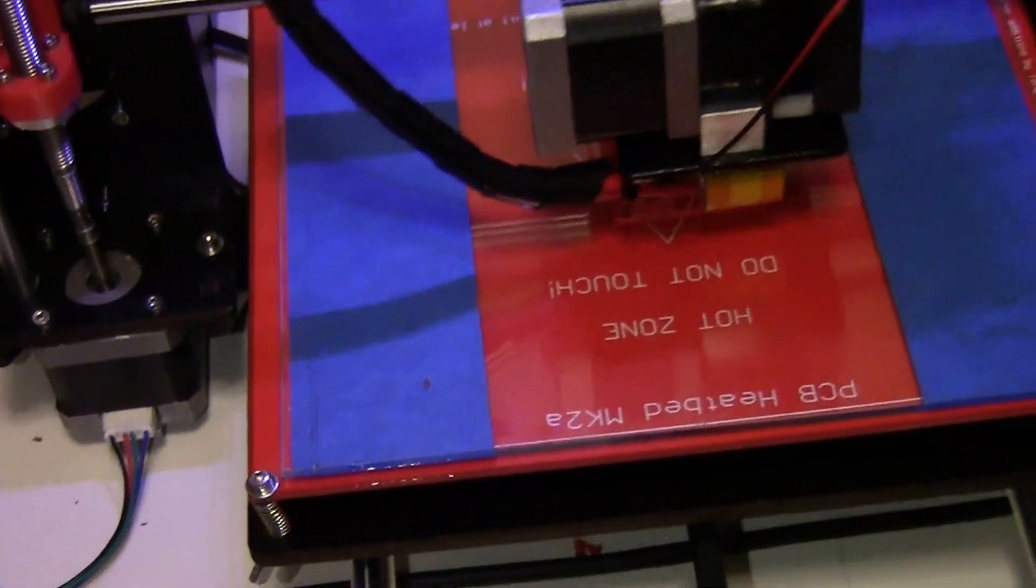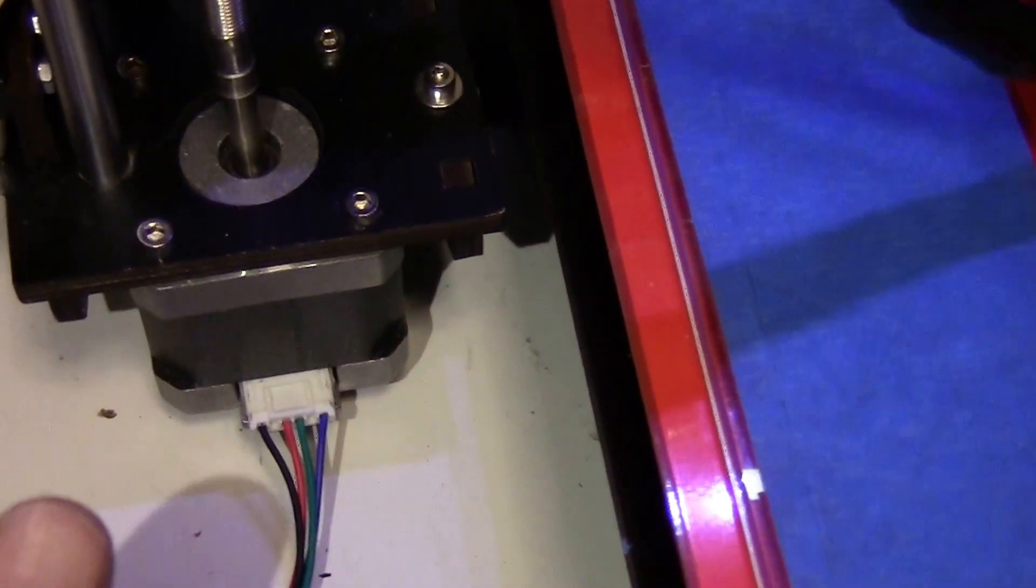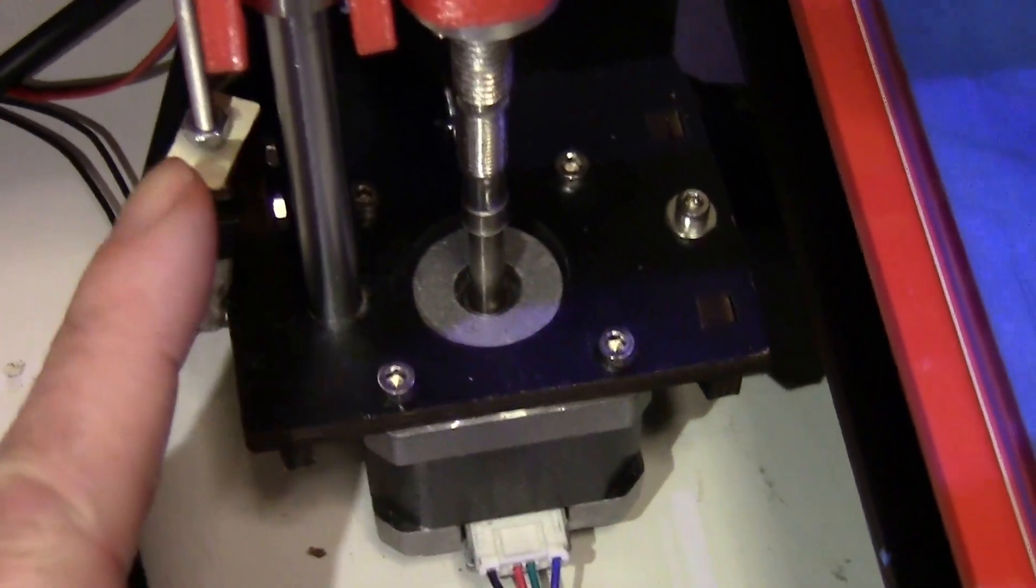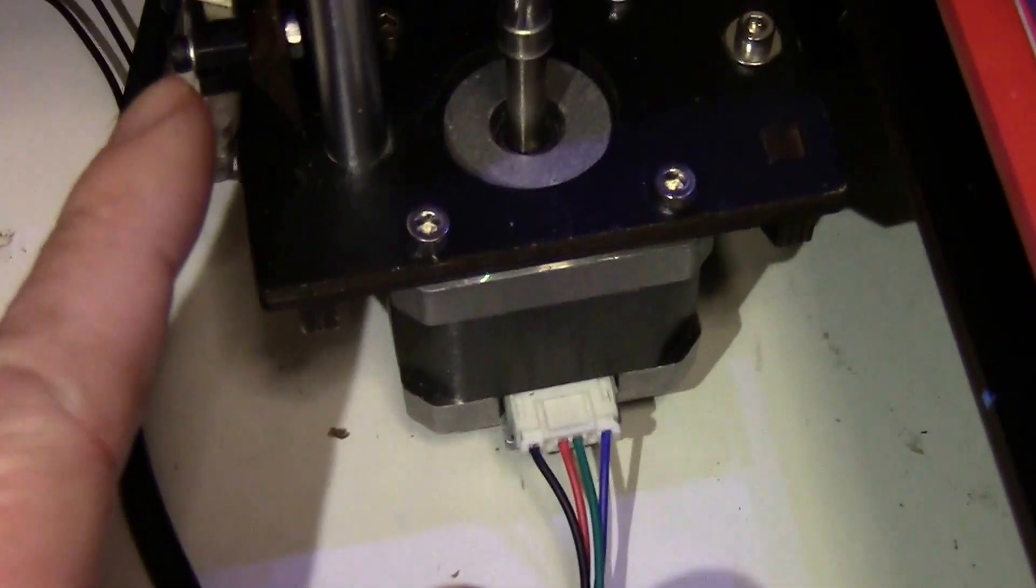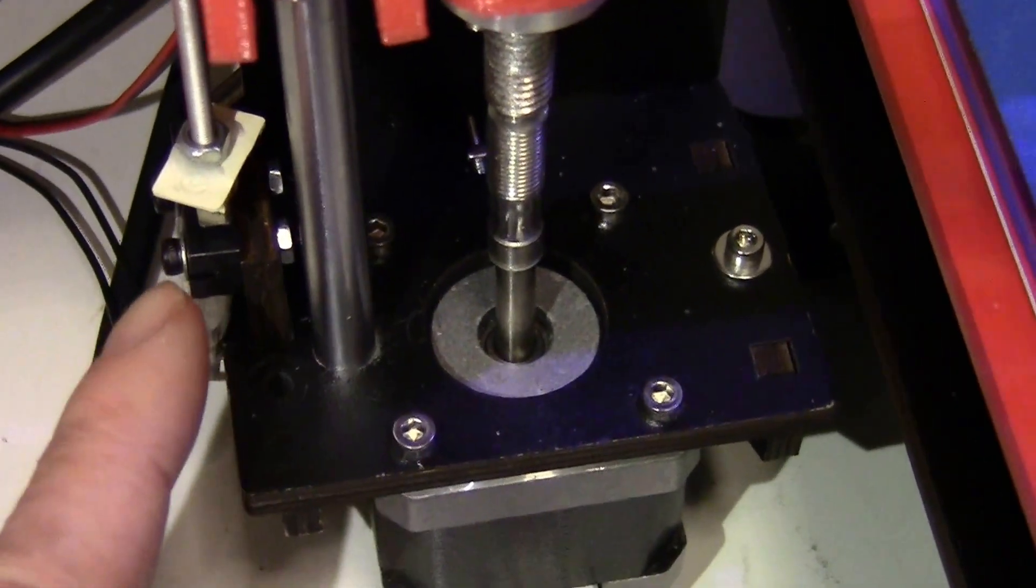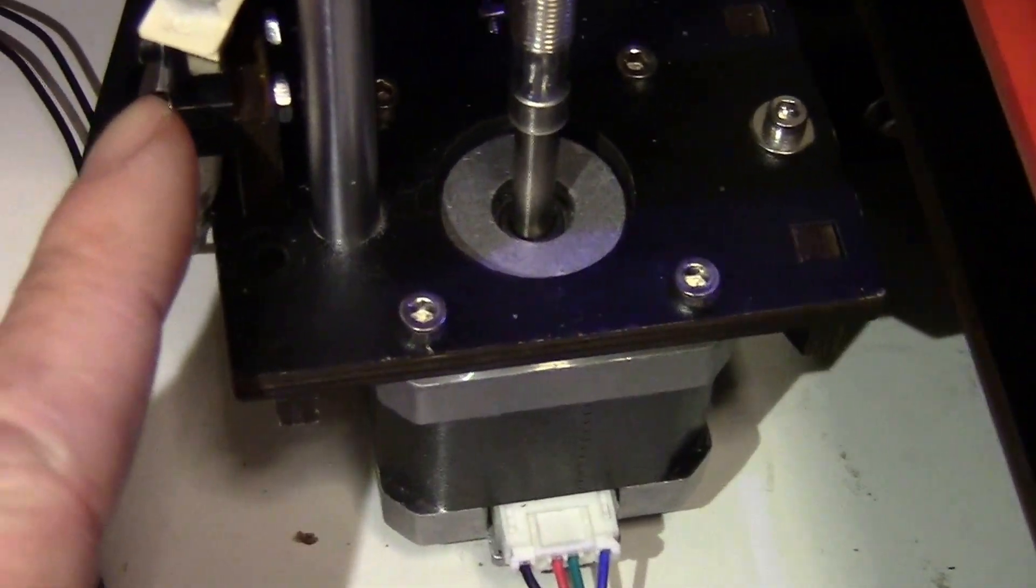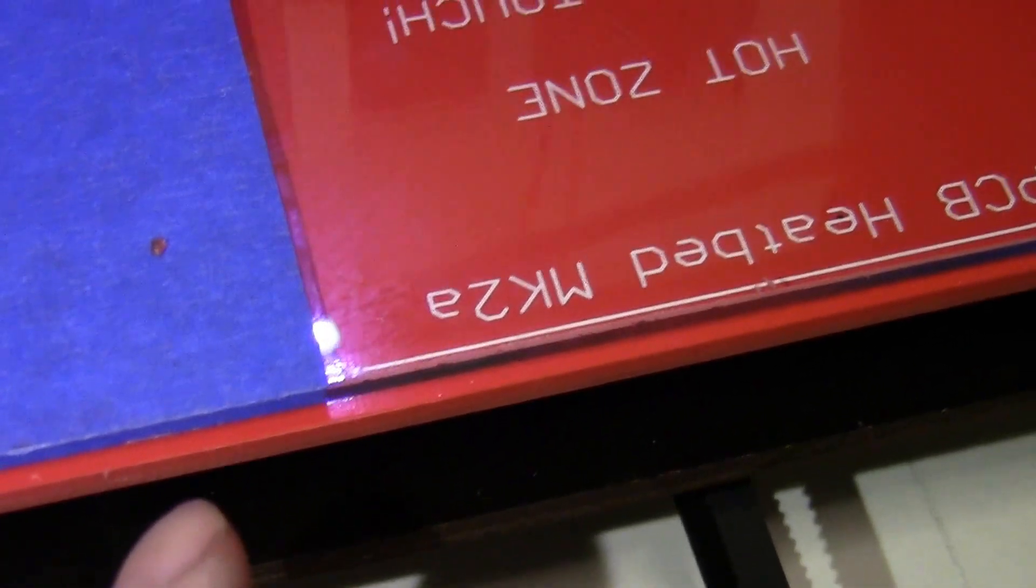The only other problem I had was with the auto homing. This rod here doesn't seem to reach down far enough to hit the Z-stop switch, so I just added a small extension to it. When I auto home this, the nozzle is just slightly below the glass there.